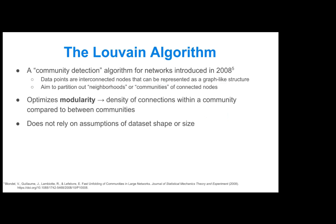For the Louvain algorithm, you think of data points as interconnected nodes that can be represented as a graph-like structure with nodes and edges. You're basically looking to partition out what the original authors called 'neighborhoods' or communities of very interconnected nodes within this larger graph. The Louvain algorithm seeks to optimize modularity, which is the density of connections within a community compared to between communities.